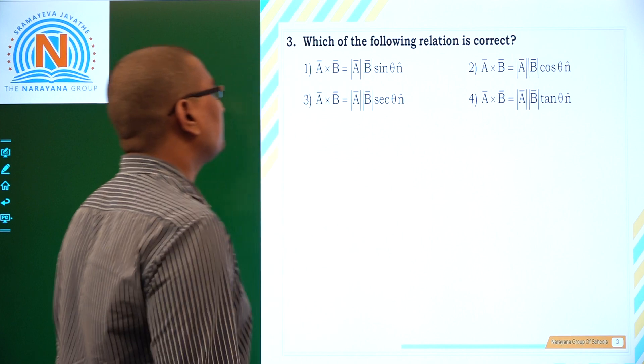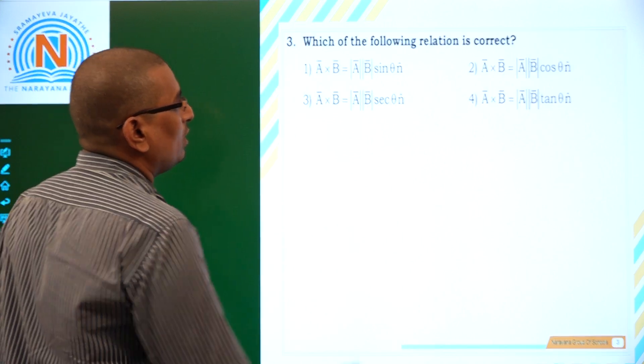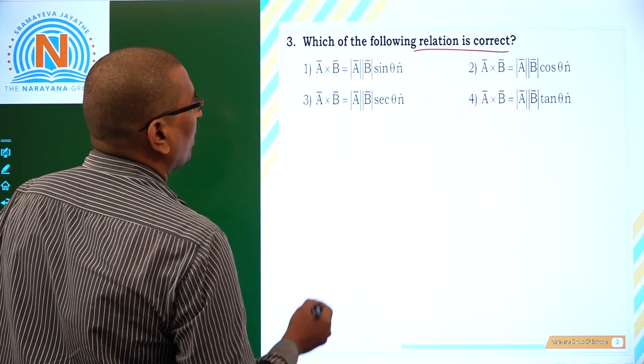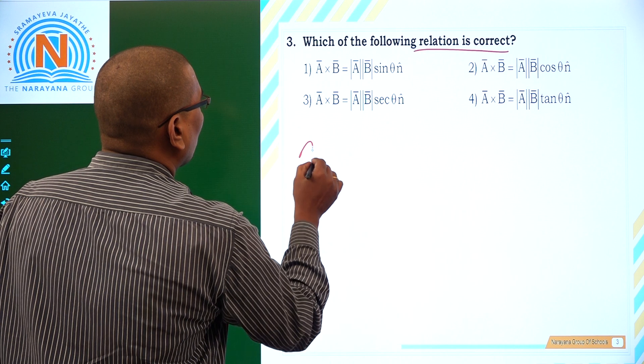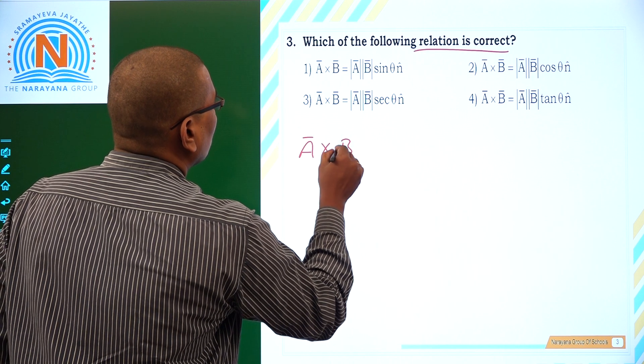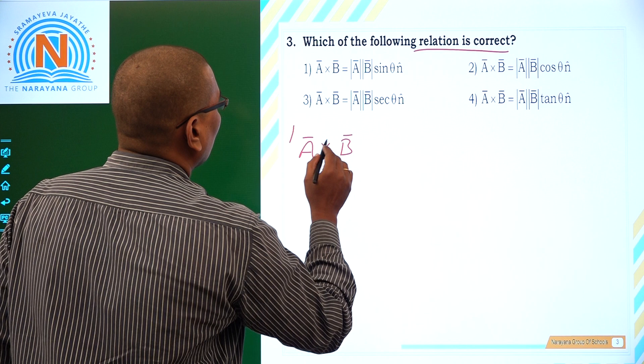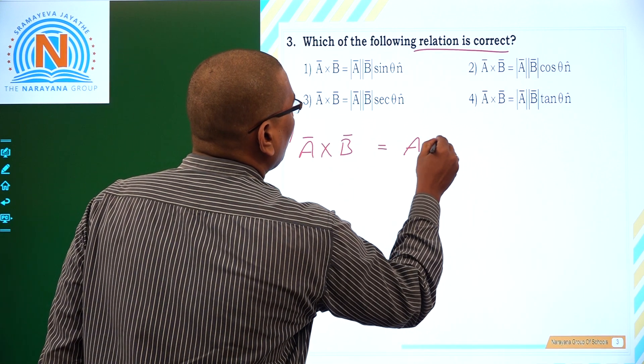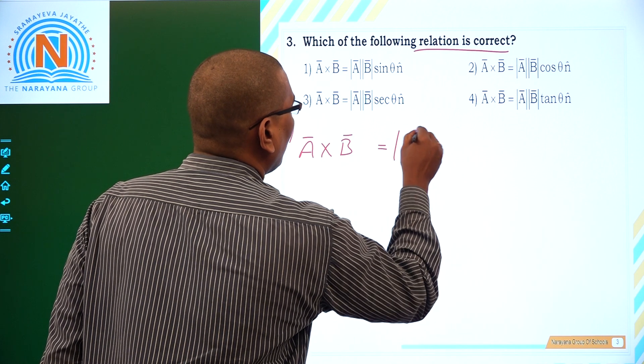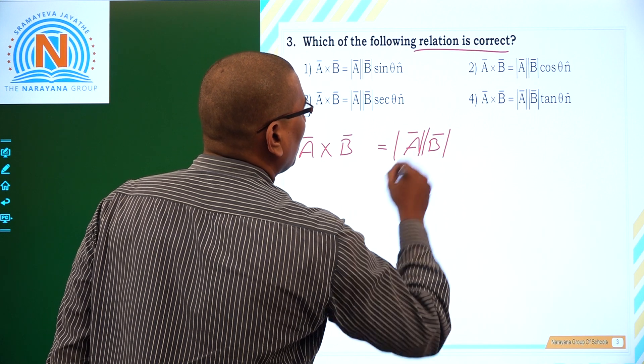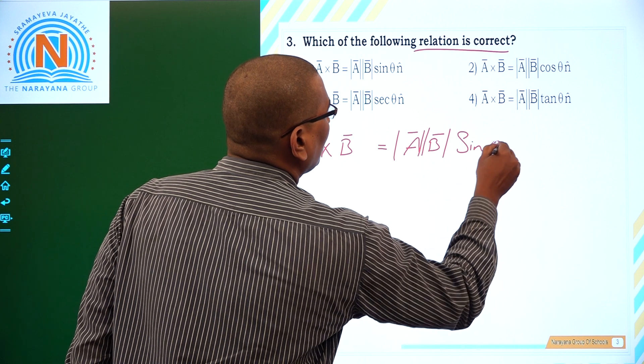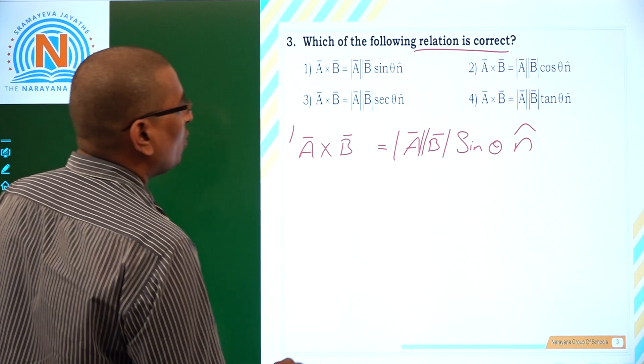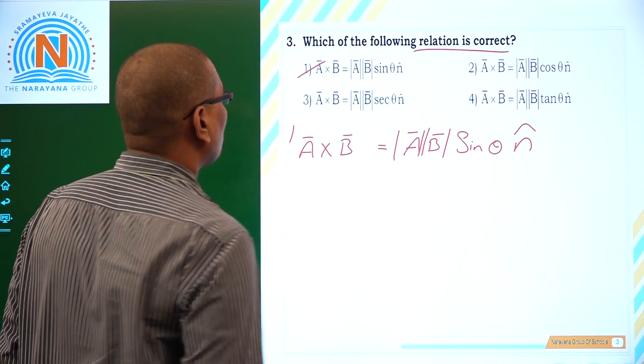So which of the following is the correct relation. So a bar cross b bar. So what is the formula for a bar cross b bar. So a bar cross b bar is equal to ab, there is magnitude of a bar and magnitude of b bar into sin theta into en cap. So which is our formula is option 1.